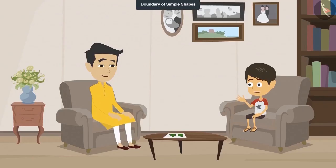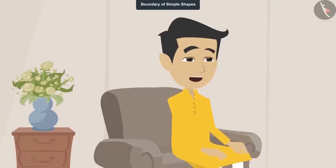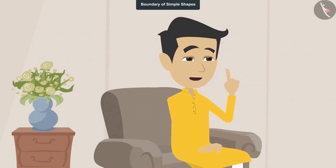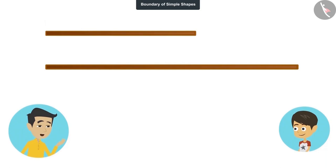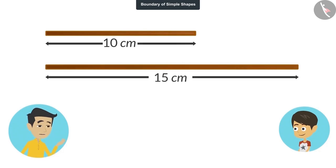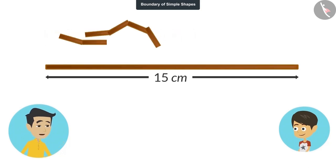But is it possible that the length of the boundary of a shape with less number of edges is more and the length of the boundary with more number of edges is less? Yes, absolutely possible. This can be seen practically. See, let's take two thin sticks of different sizes. The short stick is 10 centimeters long and the long one is 15 centimeters long. Now let's cut the short stick into six pieces and make a shape.